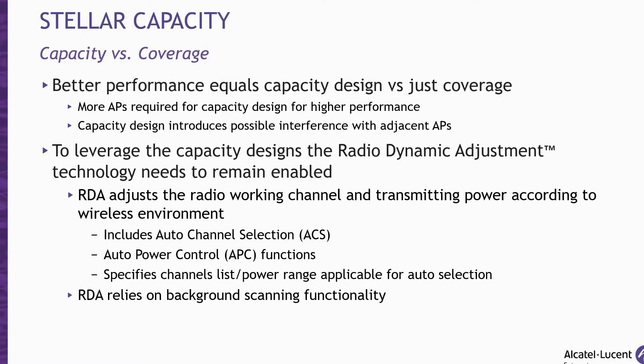To avoid mutual interference with adjacent APs, ACS Auto Channel Selection can be used to make the AP check and select the best channel under the radio environment automatically. For 5 GHz radio deployments, the Radio Dynamic Adjustment Technology, sometimes referred to as RDA, can be used to define a channel list to make the AP select channels from that specified list. By default, the working channel and transmitting power are automatically managed by RDA, which can specify a channel list and a power range applicable for auto selection, reducing the risk of low power transmitting or channel conflicts. The RDA relies on the background scanning feature, so make sure background scanning is enabled.